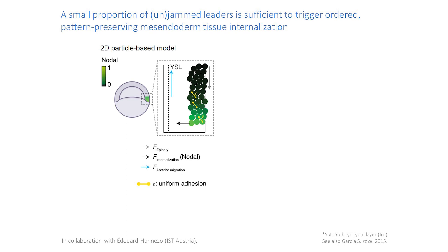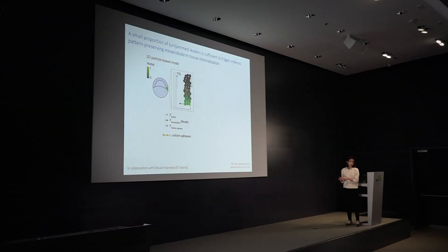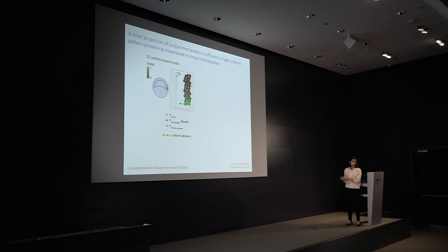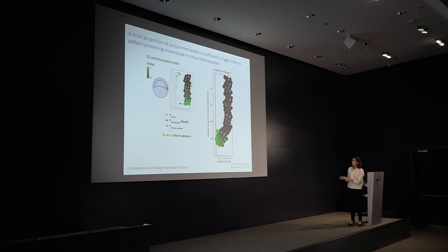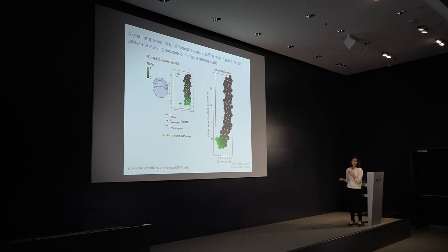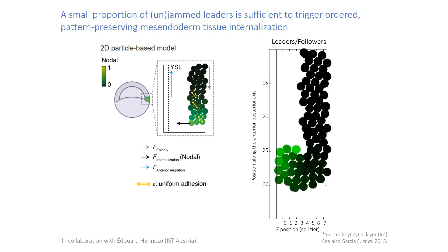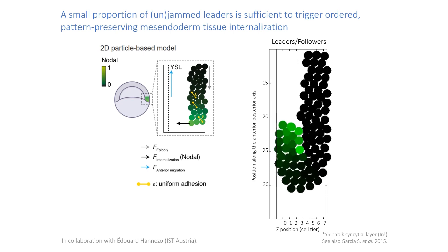This means that only cells with very peak nodal signaling levels have sufficiently strong motility forces to unjam and actually initiate tissue movement. What you can see is that even with very few leader cells, that's sufficient to drive internalization of a large number of follower cells — just as we see in vivo. When we looked at how ordered the process is in the simulations versus in vivo, we saw very nice agreement between the model and our data.